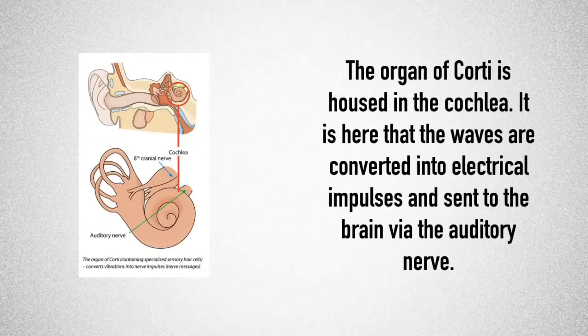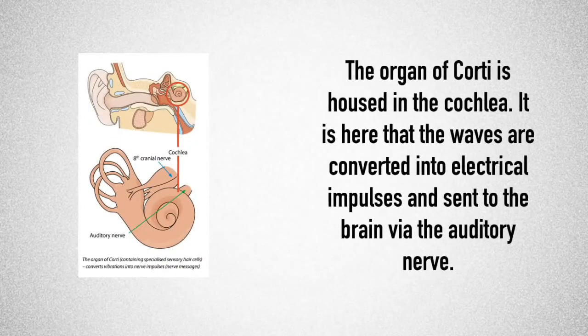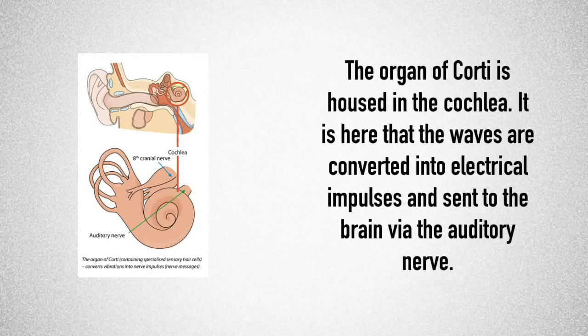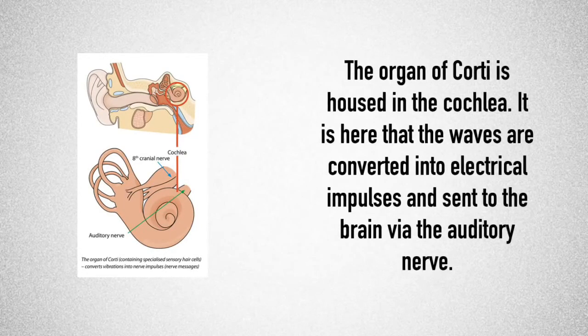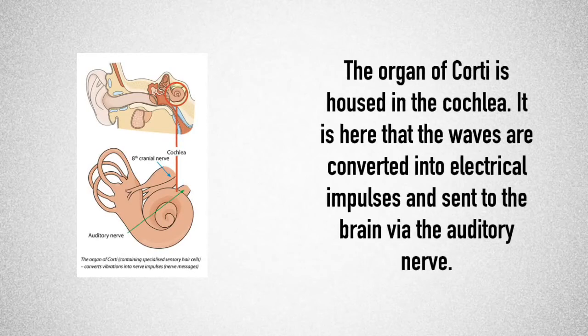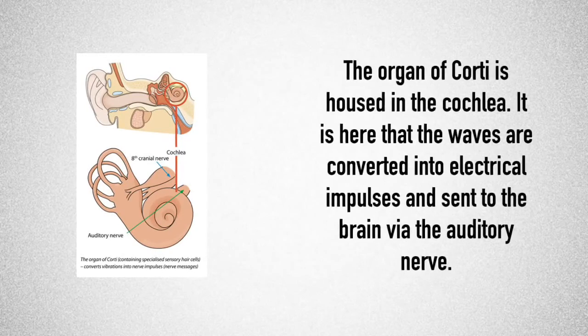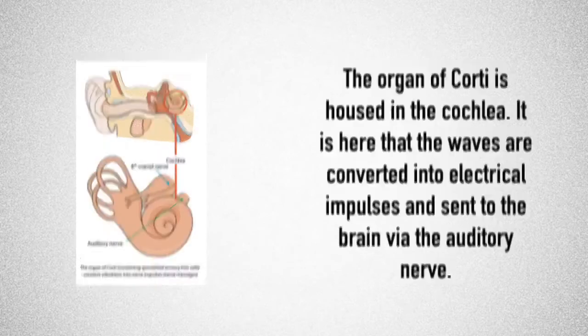So the organ of Corti is housed in the cochlea, and it is here that waves are converted into electrochemical impulses and sent to the brain via the auditory nerve. We'll be looking at the organ of Corti and its importance in a little bit more detail later on.